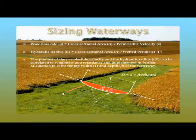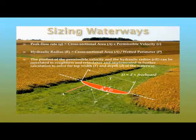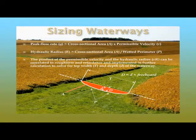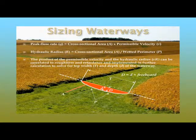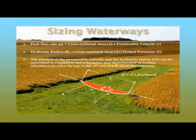For sizing the waterway, we look at the channel cross section sized for the minimum cross-sectional area that satisfies stability and capacity requirements for the given waterway shape and flow rate. We know our peak flow rate and the permissible velocity for our soil and vegetation conditions. From that we can solve for the cross-sectional flow area perpendicular to flow, then calculate the hydraulic radius — cross-sectional area divided by wetted perimeter — to determine the needed depth within the grass waterway.